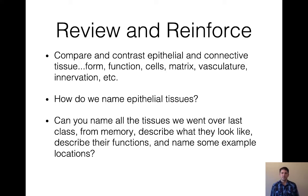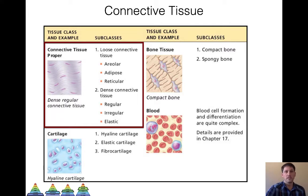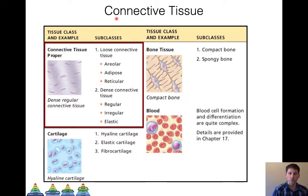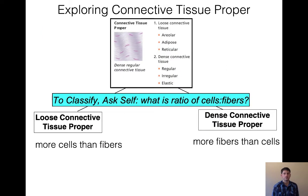Welcome back. Let's jump into connective tissue and start with connective tissue proper. In this diagram, on the left we have our tissue class and on the right our subclasses. There are four types of connective tissue: connective tissue proper, cartilage, bone tissue, and blood. We're going to look at connective tissue proper first, which has two subclasses — loose and dense connective tissue.